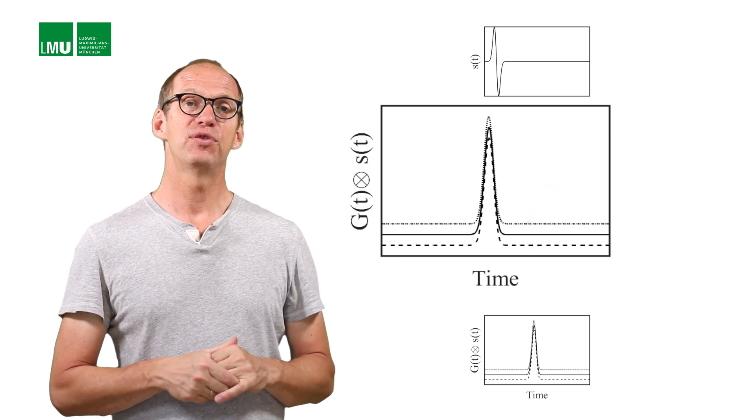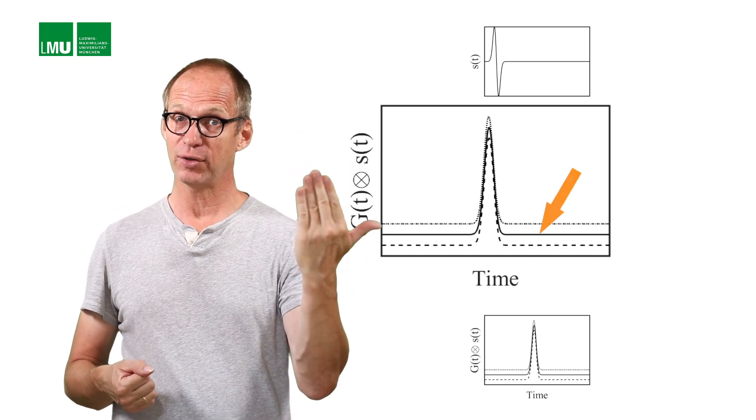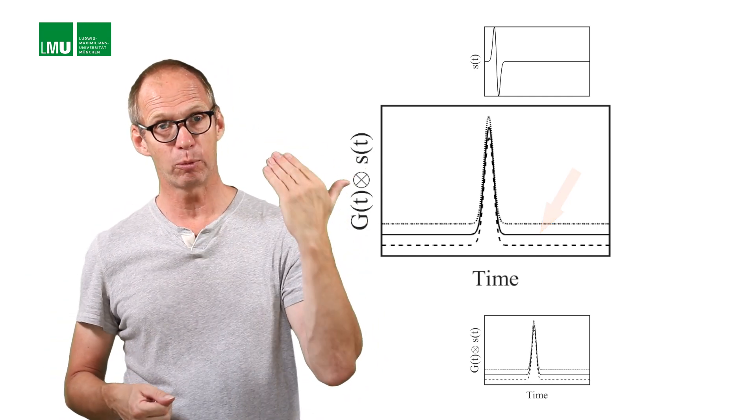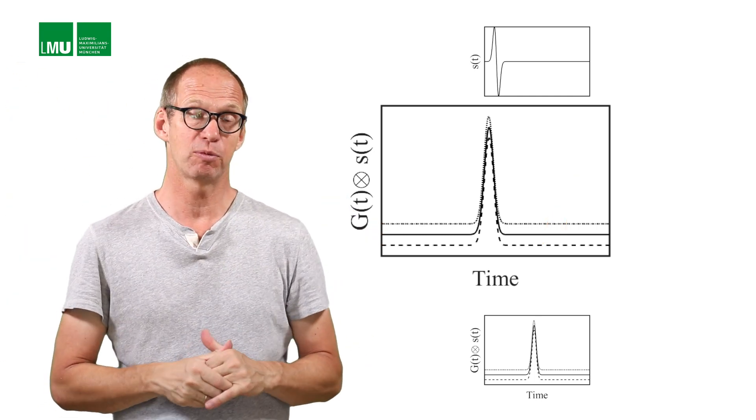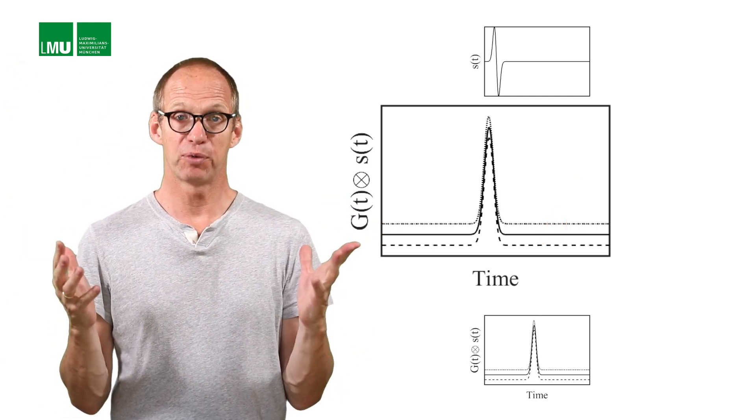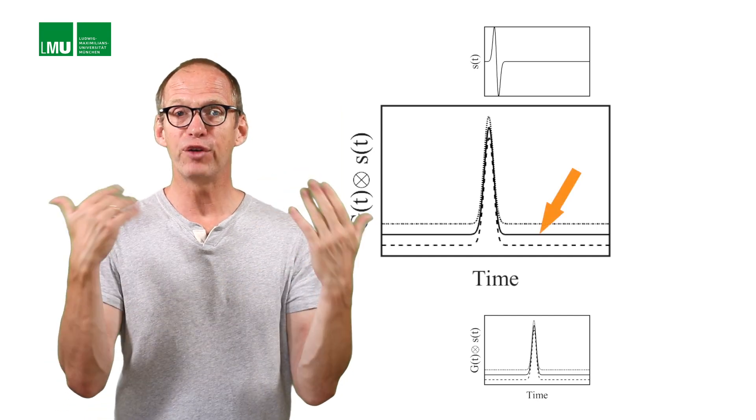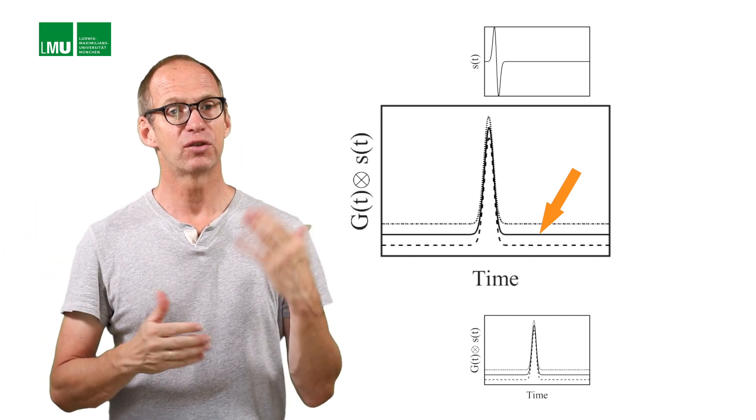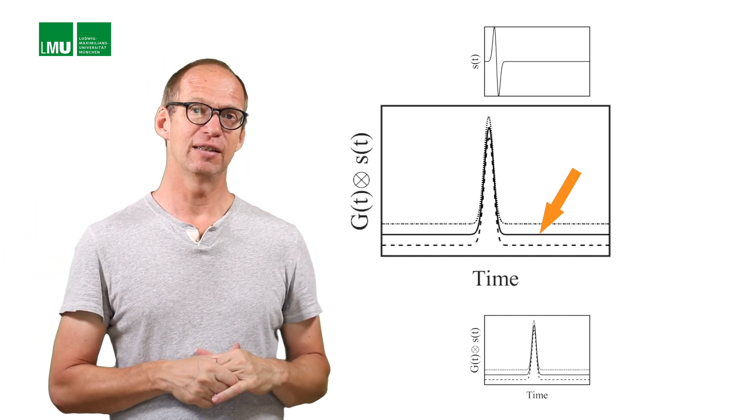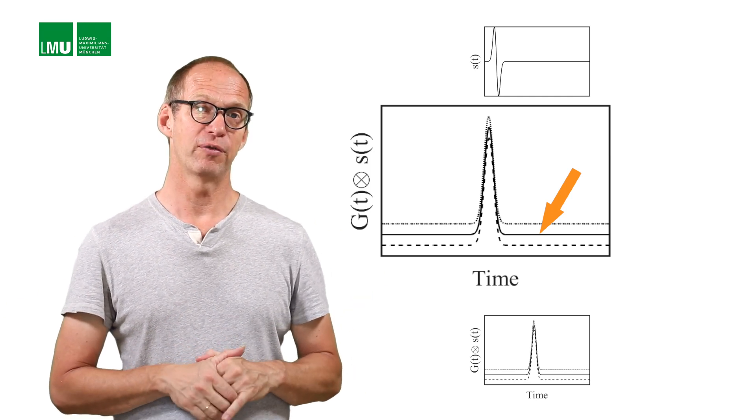What happens if you do exactly the same operation, not with the exact Green's function, but with the numerical Green's function, which obviously seems to be wrong? Surprise! You actually obtain the correct solution. Because you're filtering out the part of the solution that is incorrect, you still obtain, in this case, for these parameters, the correct solution of this problem.